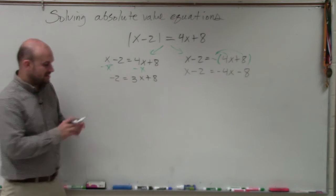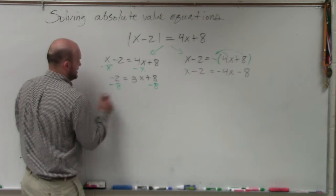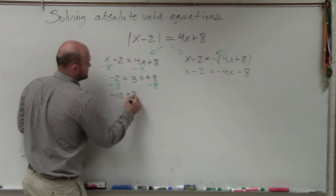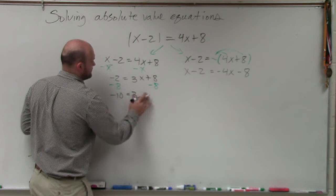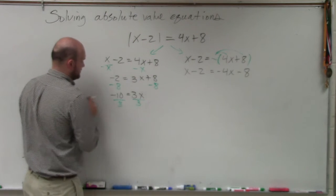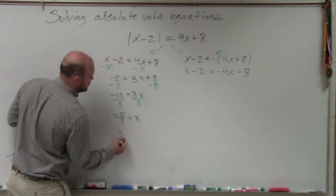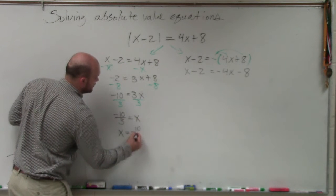Then I'll isolate the x. So I'll subtract an 8. So I have negative 10 equals 3x. Then I'll divide by 3, divide by 3. And I have negative 10 over 3 equals x. Or x equals negative 10 over 3.